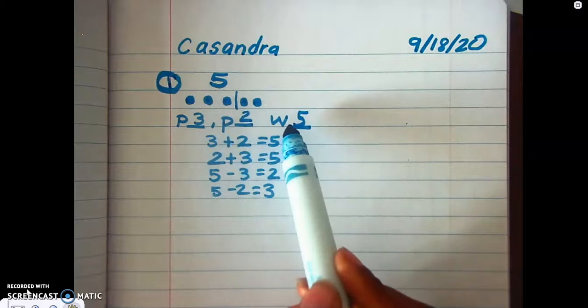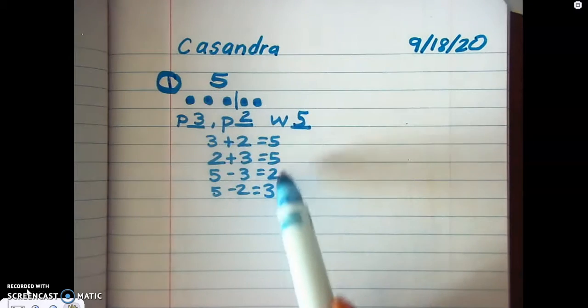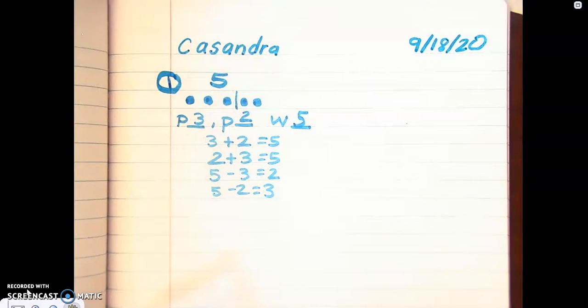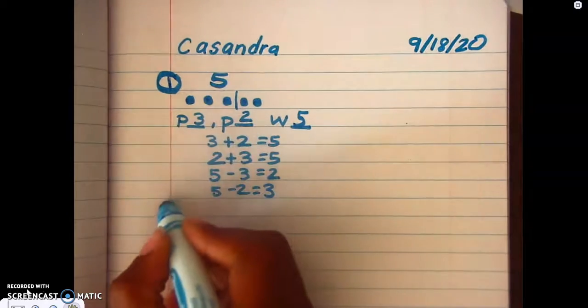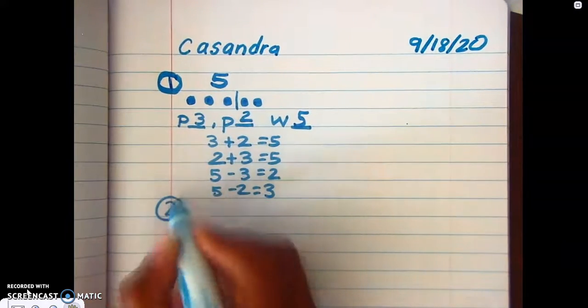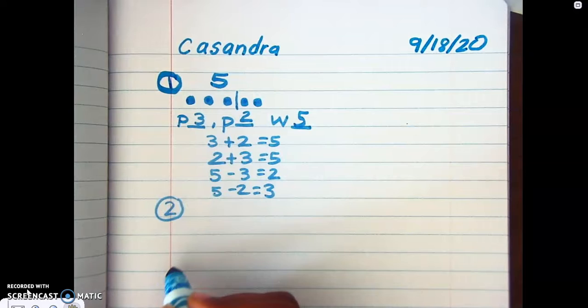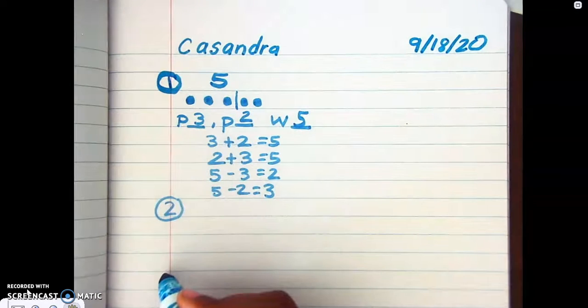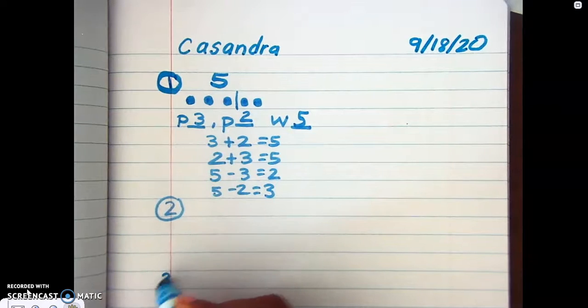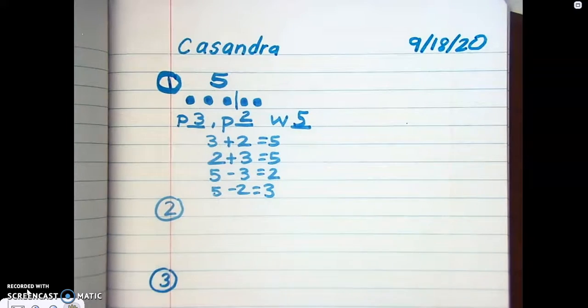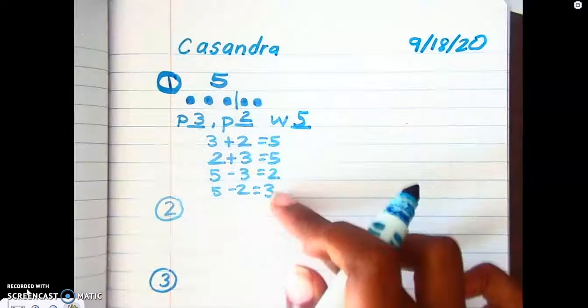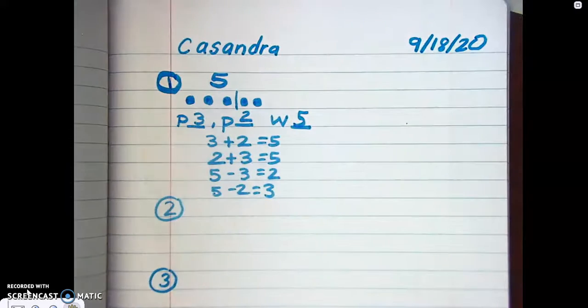Tell me what are your parts, what's the whole, and then make a fact family. You're gonna do this two times, so you're gonna do this one time, you pick a number, and then you're gonna do this another time, you pick a number. Okay, that means you should have two of these in your math notebook. When the time is over, I'm gonna be coming in to check on you to see what you're doing and if you need help.